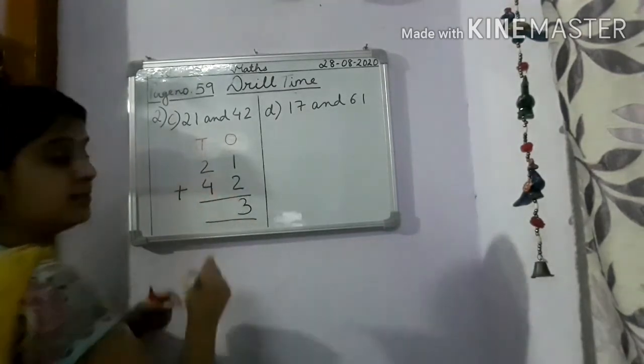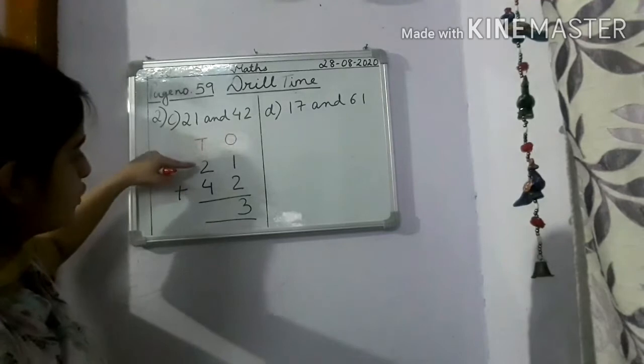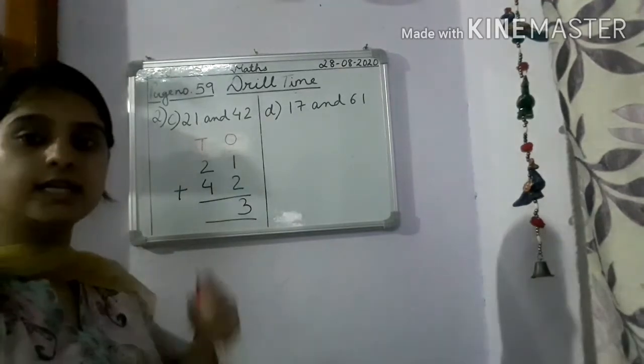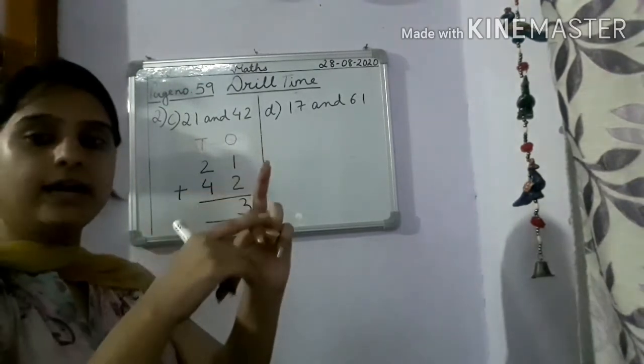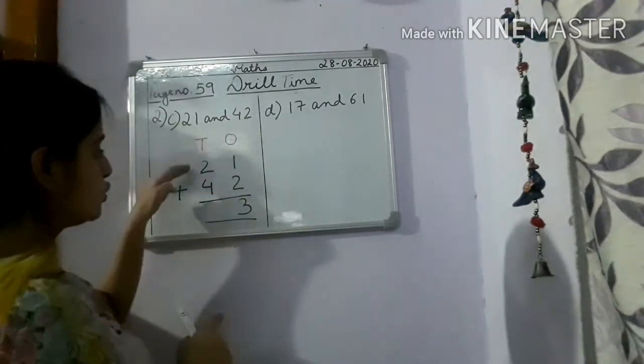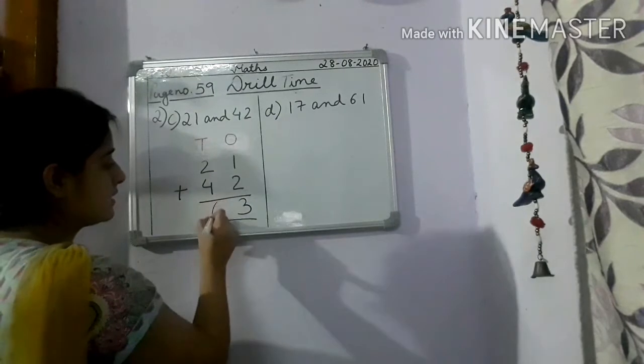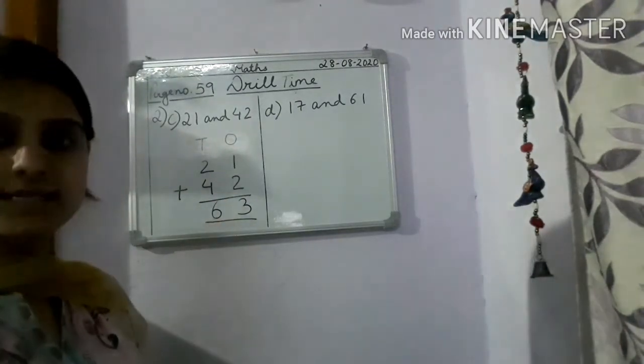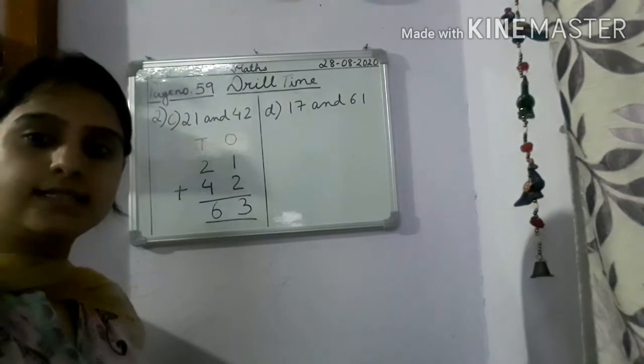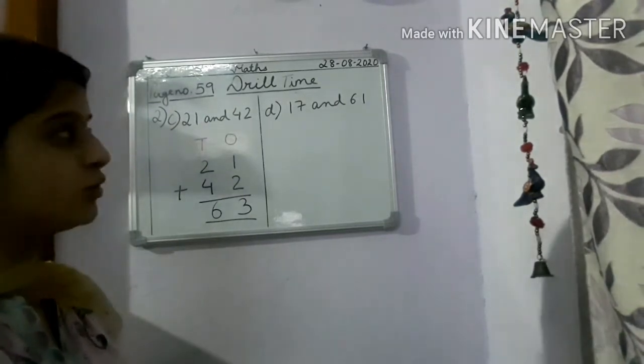And then move to tens place. 2 plus 4 is what children? Keep 4 in your mind, open two fingers. 5, 6. So 2 plus 4 is 6. The sum is what children? 63. Is it done? Now let's move to next.